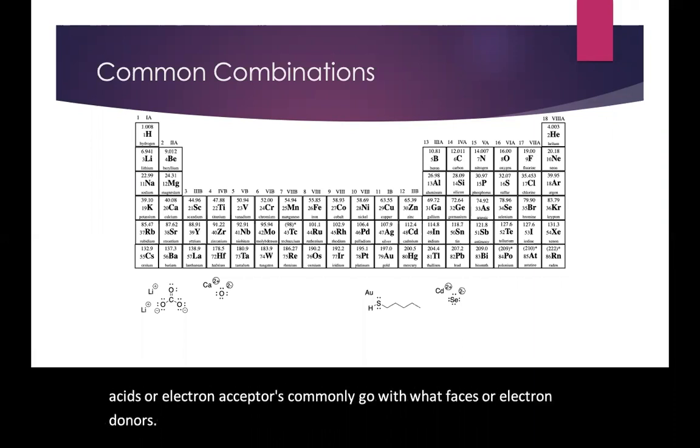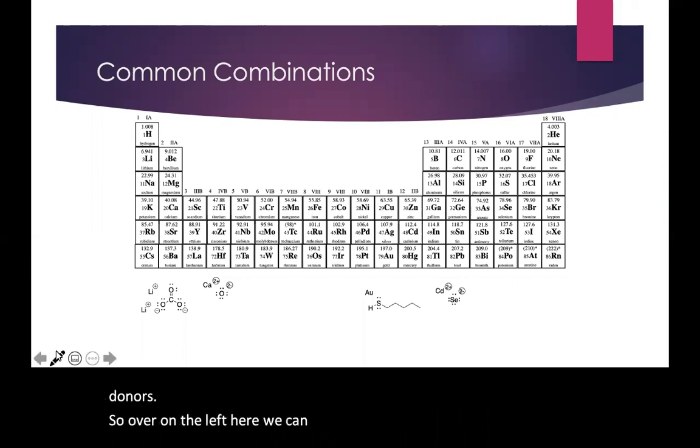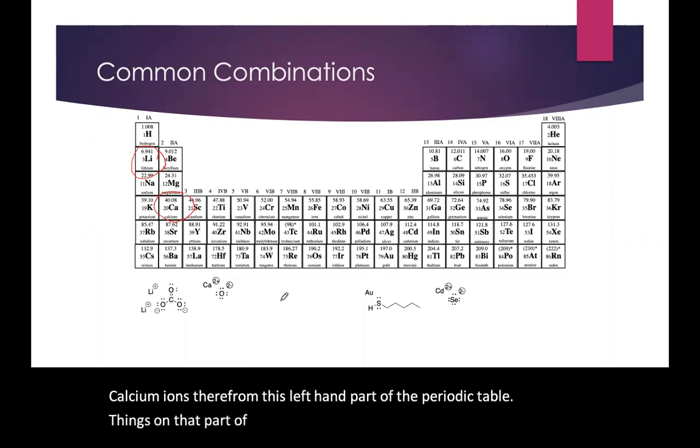So over on the left here we can see some lithium ions, calcium ions. They're from this left-hand part of the periodic table, and things on that part of the periodic table are very frequently found in combination with counter ions that contain oxygen from over here.